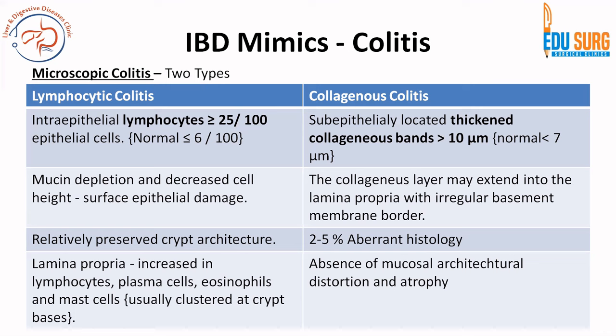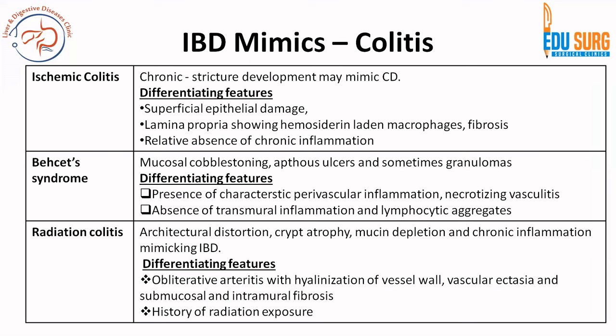Two to five percent of collagenous colitis cases can have aberrant crypt histology with preserved mucosal architecture. This is what differentiates collagenous colitis — it is a sub-epithelial disease with absence of mucosal architectural distortion and atrophy — and this is what differentiates microscopic colitis from inflammatory bowel disease. Coming to ischemic colitis: in the acute phase there is superficial epithelial damage and the lamina propria shows a hyalinized pattern with hemosiderin-laden macrophages and fibrosis. There is usual absence of chronic inflammation unless the disease is chronic, where you can have transmural involvement with strictures without inflammation.